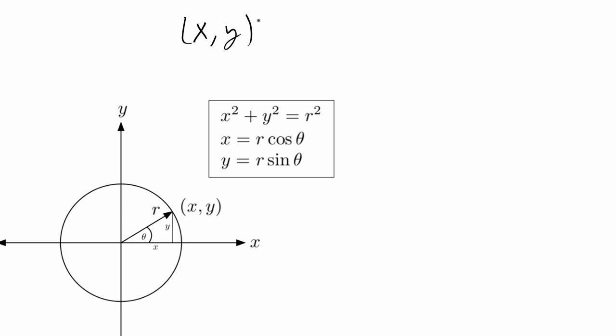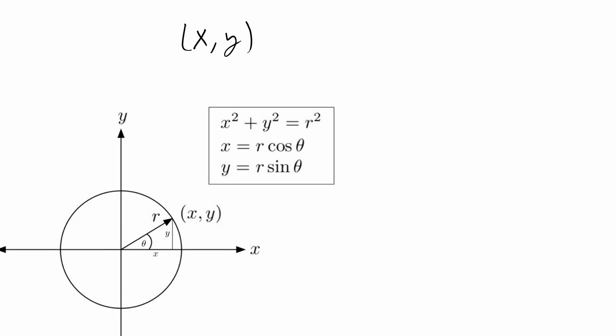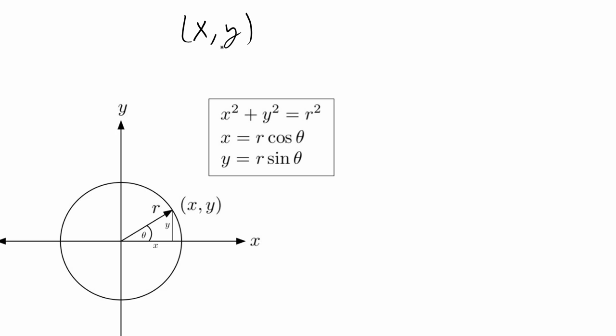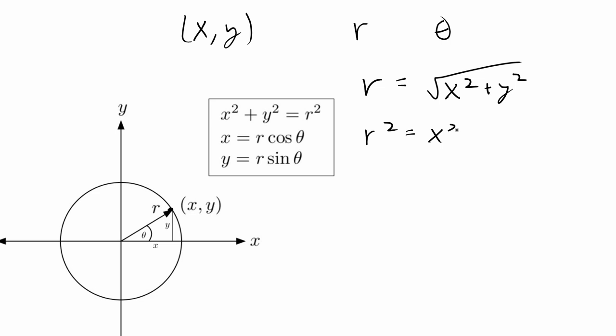We can consider the random samples as a coordinate in the Cartesian plane, plotted as (x, y). From there we convert the points into polar coordinates. We need R, the distance from the origin to the point (x, y), and theta, the angle from the x-axis. The formula for R is the square root of x² plus y², so R² equals x² plus y².